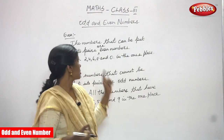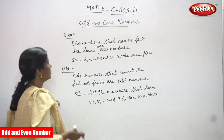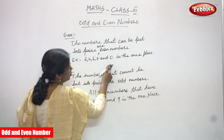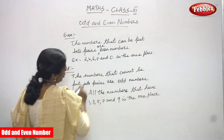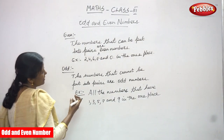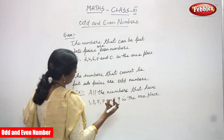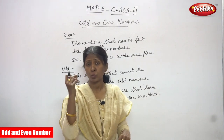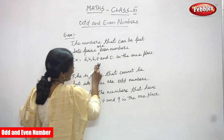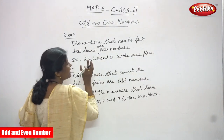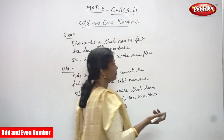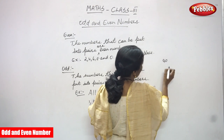All the numbers that have 2, 4, 6, 8, and 0 in the ones place are called even numbers. You can take any number — if the ones place digit is 2, 4, 6, 8, or 0, it is called an even number.